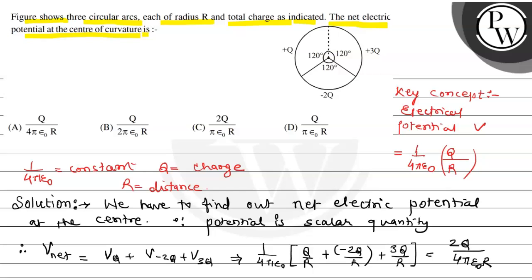So this is 2q upon 4 pi epsilon 0 r. This 2 and 4 will cancel to give 2 times, therefore net you will get q upon 2 pi epsilon 0 r. So the value is q upon 2 pi epsilon 0 r. Option B is the right option.